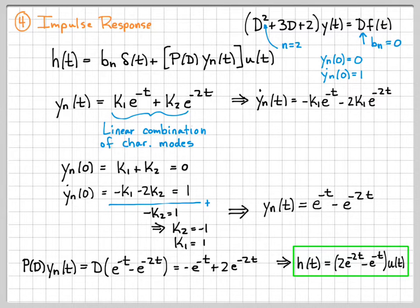In the next video, we'll take this impulse response and convolve it with the input to find the zero state response of the system, and then we'll tie the zero state and zero input response together to get the total response.